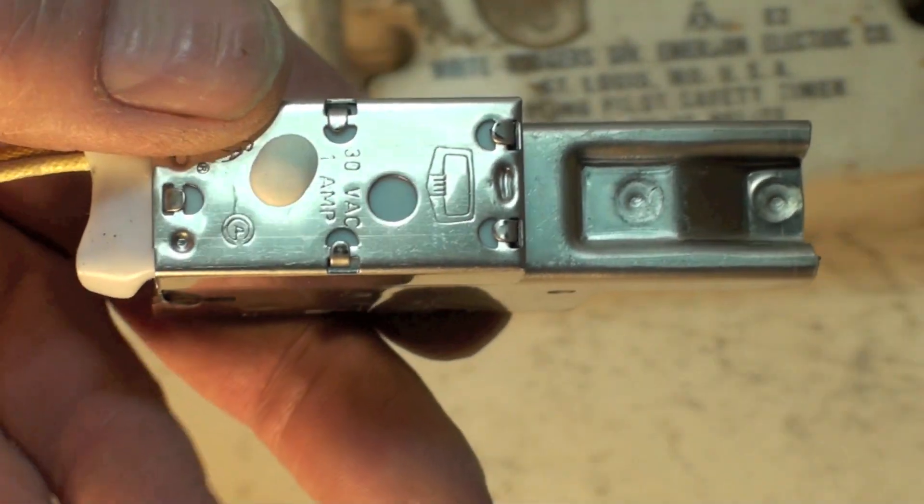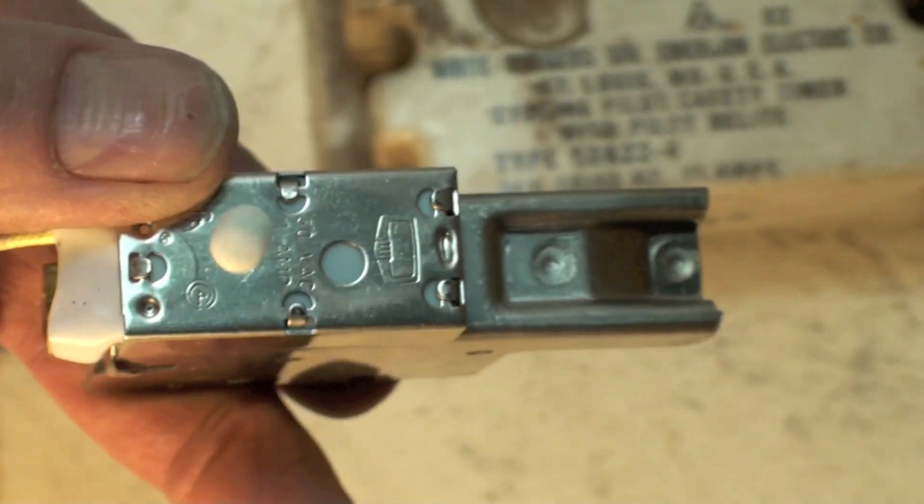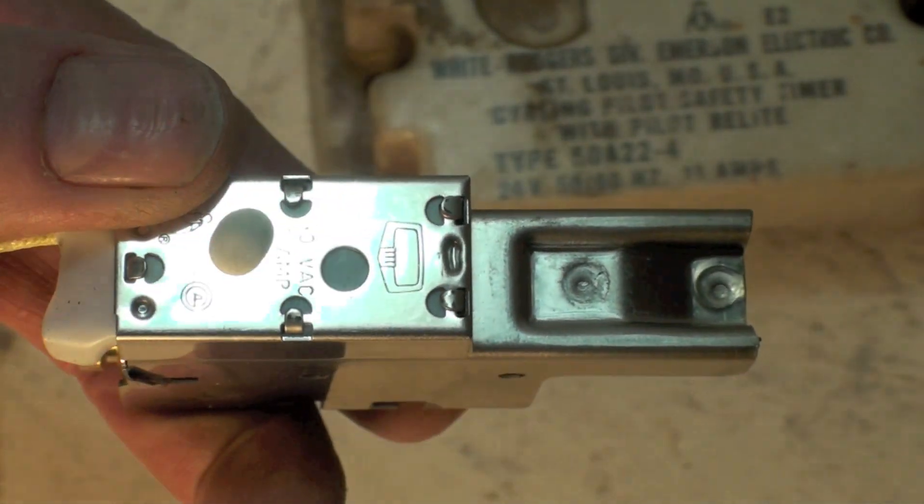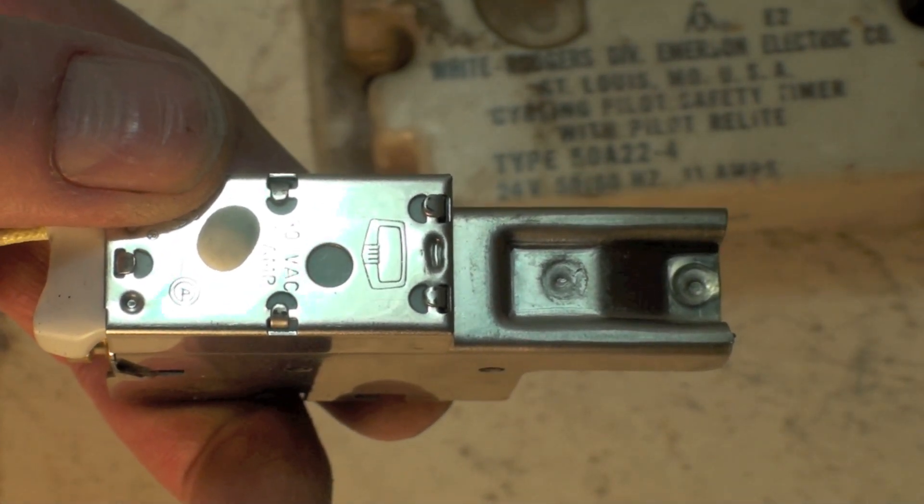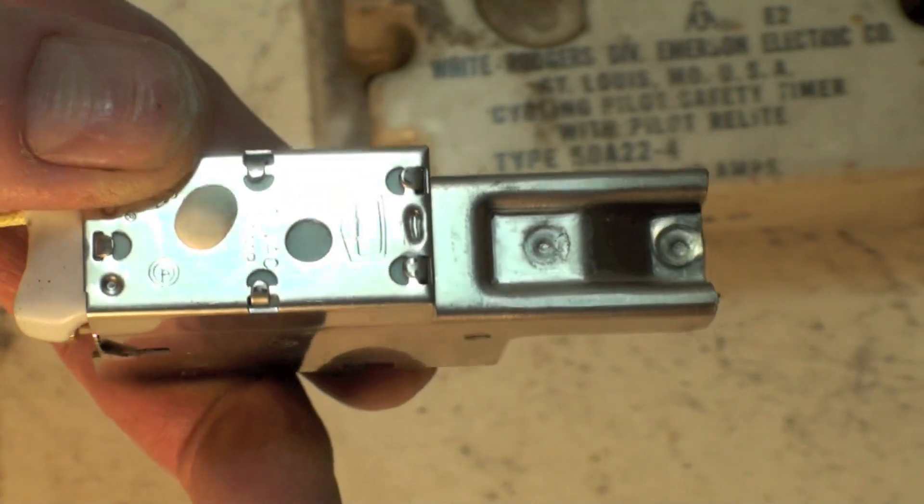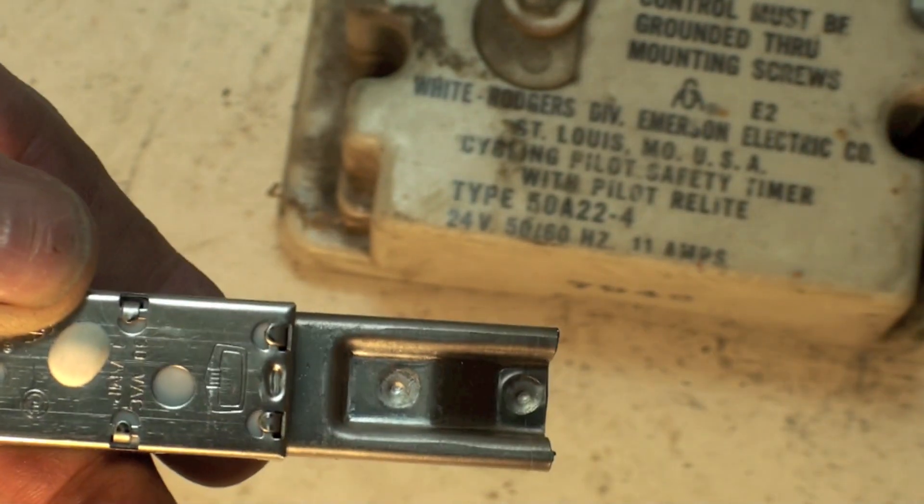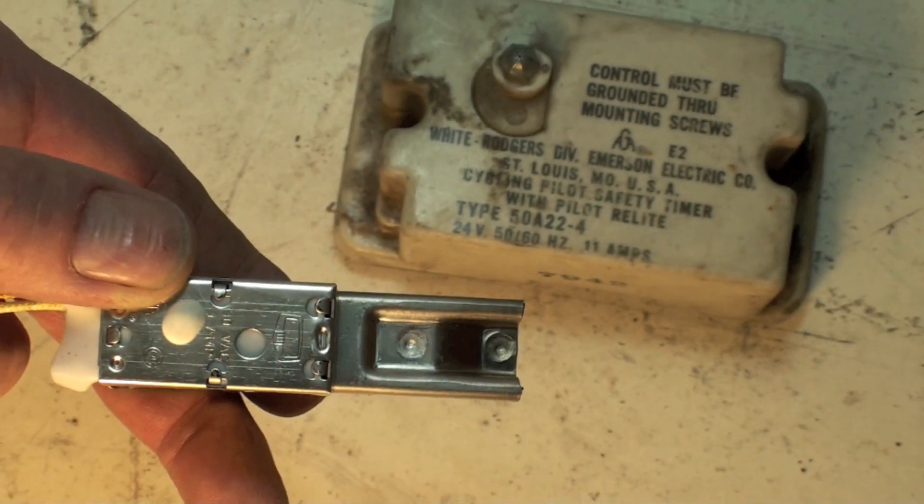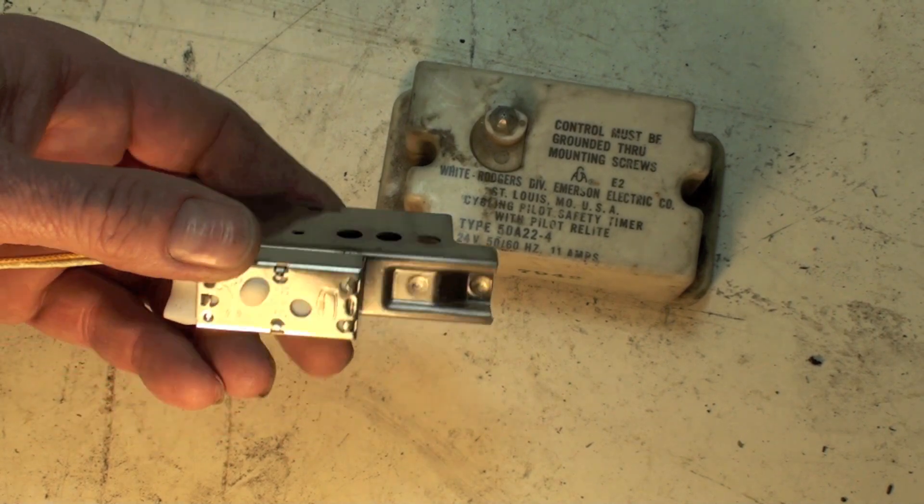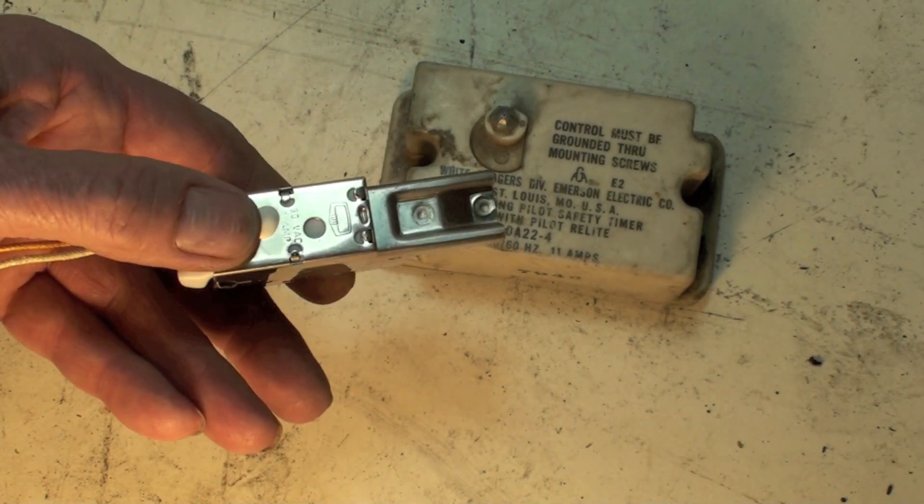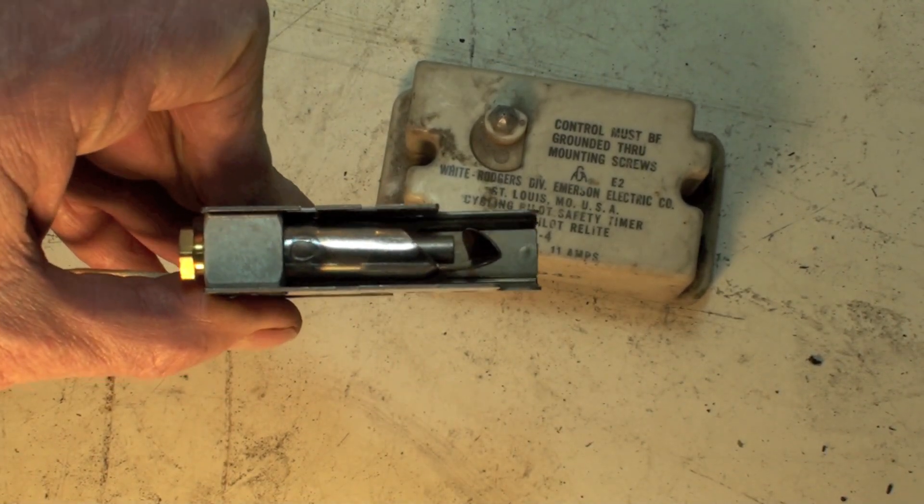So this is just a pilot relight system. A lot of them are used in commercial rooftop units that tend to get their pilots blown out and this would relight the pilot. If for some reason the spark could not relight it, then it would shut off main gas because it would lose the power from this normally open switch. When that bimetal cooled down it would shut off and the main gas would go off.